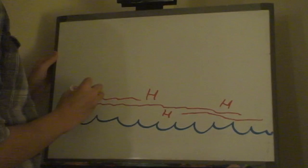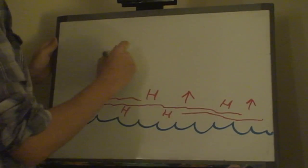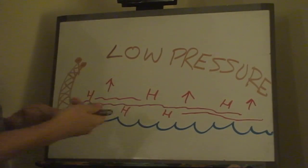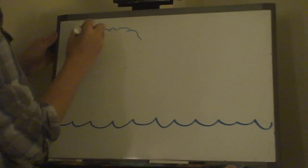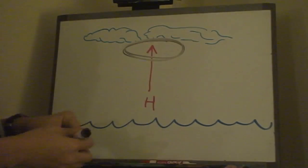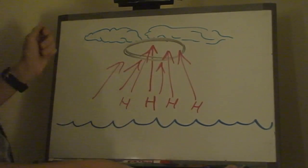Hurricanes are formed by warm air over the ocean rising rapidly, causing an area of low pressure. This always happens in a tropical area. Warm air gets sucked into the cyclone, and the more warm air that gets pulled in, the more intense the weather system becomes.